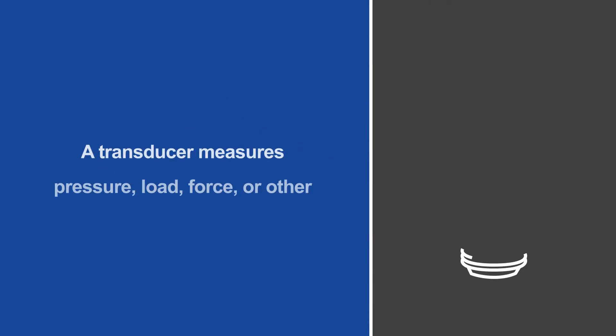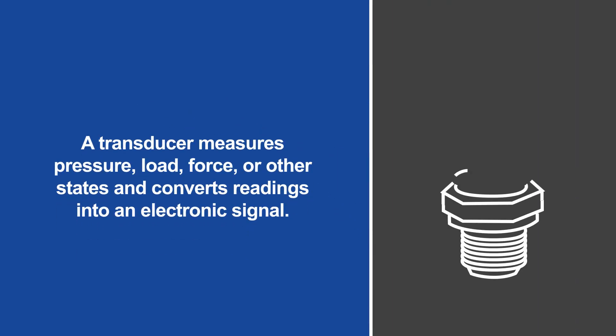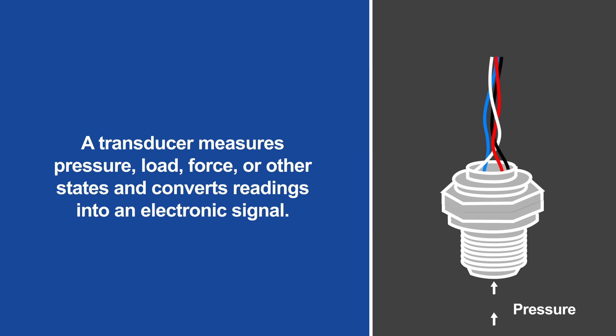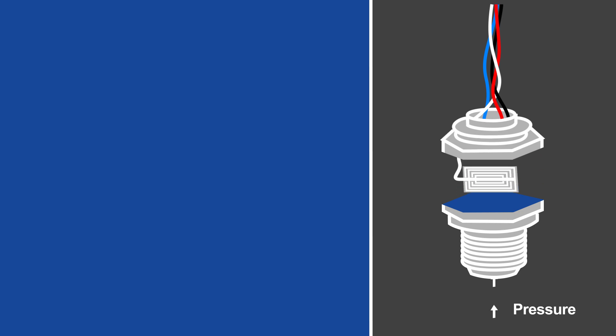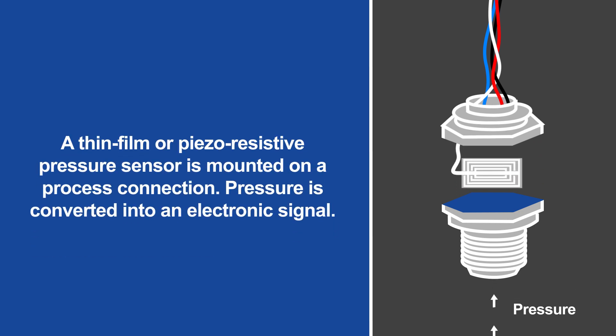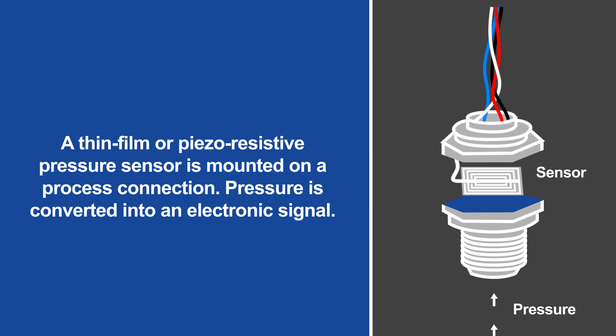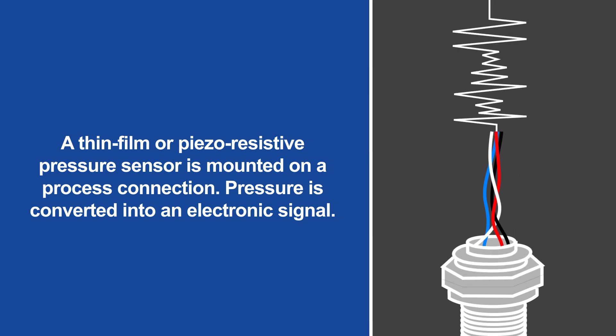Let's define these terms and then look at some examples. A transducer is an instrument that measures pressure, load, force, or other states and converts the reading into an electronic signal. In a pressure transducer, a thin film or piezo-resistive pressure sensor is mounted on a process connection. The transducer converts the pressure into an analog electronic output signal, typically as a millivolt per volt output.